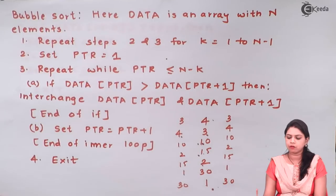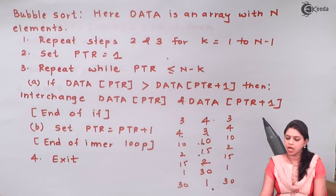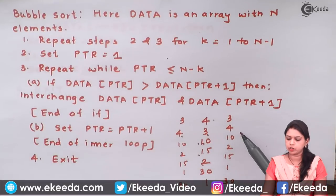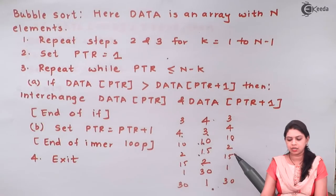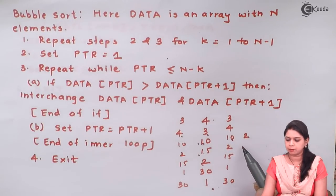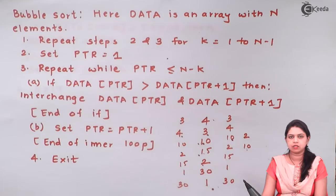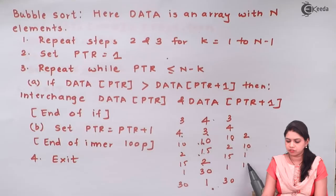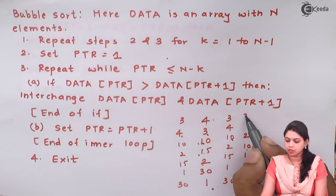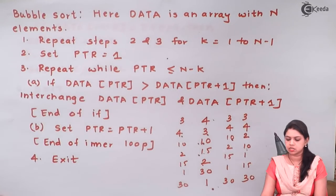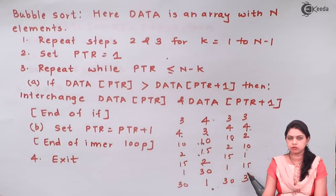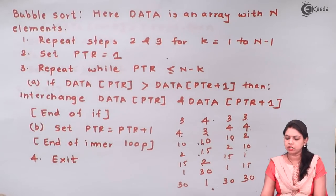I will apply bubble sort again for the second pass. Comparing 3 and 4: no exchange. Comparing 4 and 10: no exchange. Comparing 10 and 2: my 2 will go up and 10 will come down. Between 10 and 15: no exchange. Between 1 and 15: my 1 goes up and 15 comes down. Between 15 and 13: no exchange. After the second pass the list is: 3, 4, 2, 10, 1, 15, 13. Still not sorted.